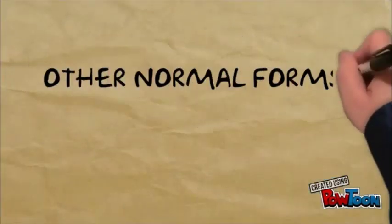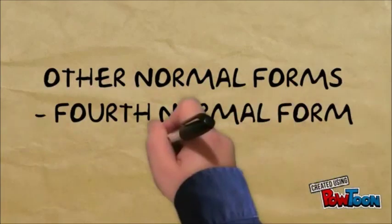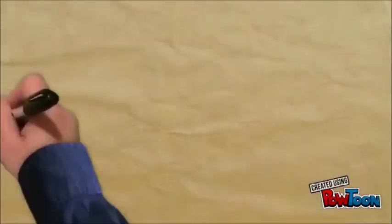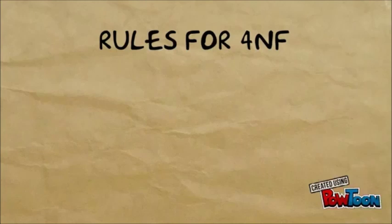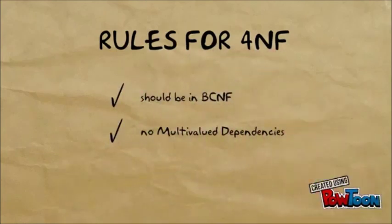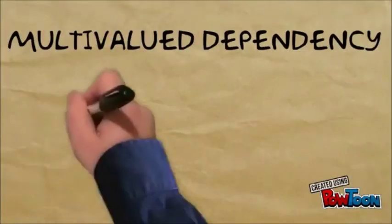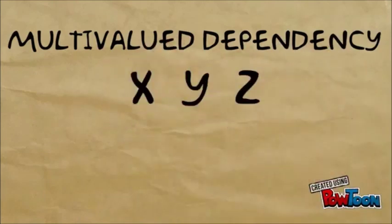We move on to the two other normal forms. This includes the fourth and fifth normal form. We'll start with the fourth. Here are the rules for 4NF. The database should be in Boyce-Codd normal form, and it should not contain multivalued dependencies already, because 4NF will remove those.